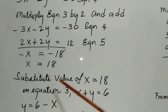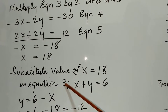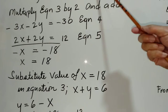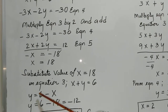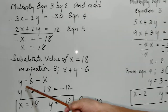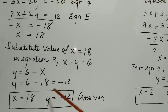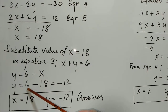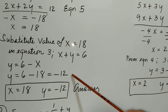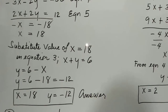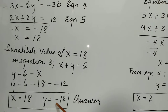So x equals positive 18. We substitute x equals 18 into equation 3: x plus y equals 6, so y equals 6 minus x, which gives y equals 6 minus 18, so y equals negative 12. The answers for problem 1 are x equals 18 and y equals negative 12.